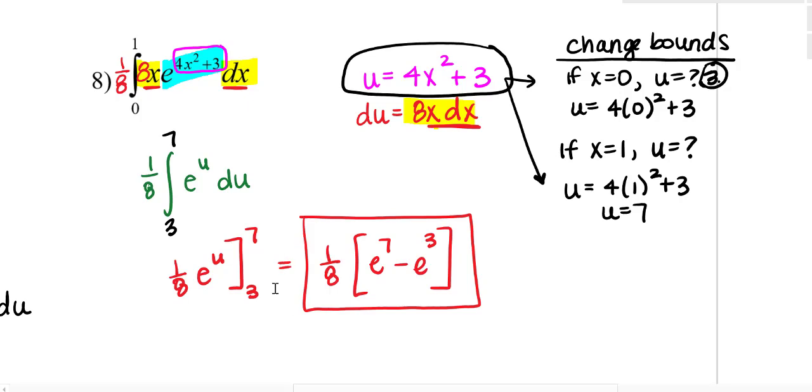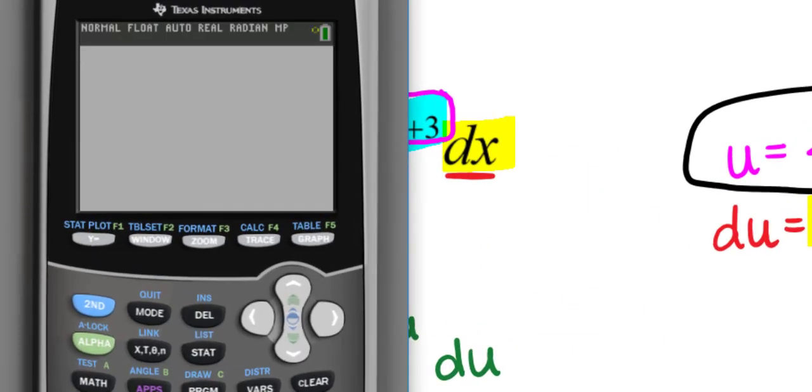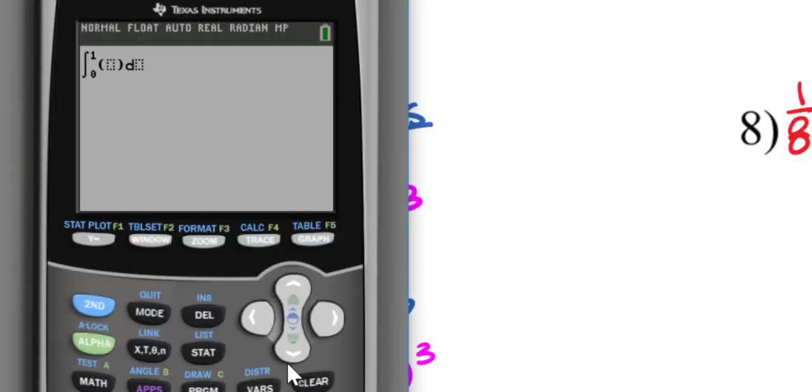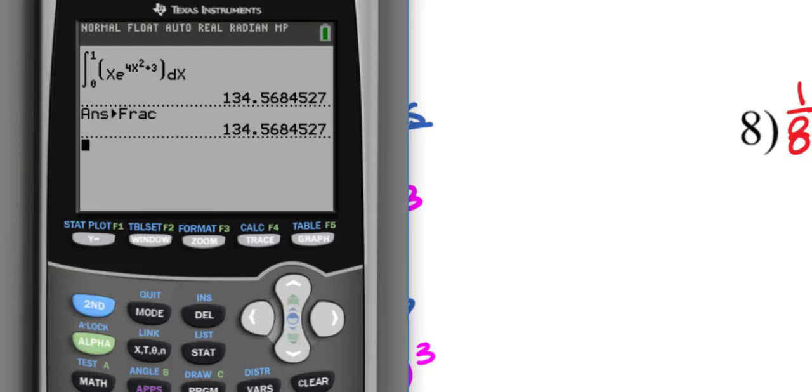Certainly this is worth checking on your graphing calculator real quick. So I will say math 9. Again, I'm going to type in the original. I'm going from 0 to 1, and I'm integrating x e to the 4x squared plus 3 with respect to x. When I hit enter, I do not expect to get a very nice rational answer because it's in terms of e. But what I think is that this is equivalent to e to the 7th minus e cubed all divided by 8. Yep, they're equivalent. So I know my answer is correct.